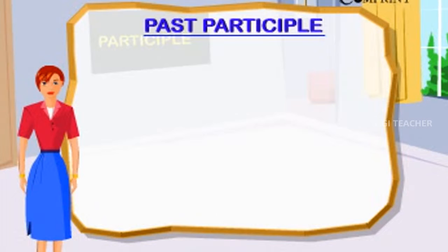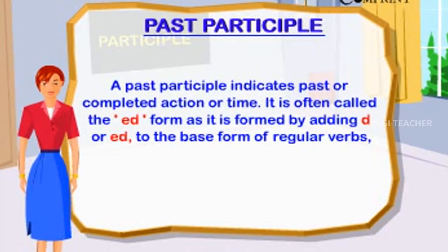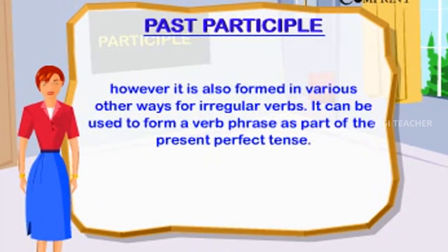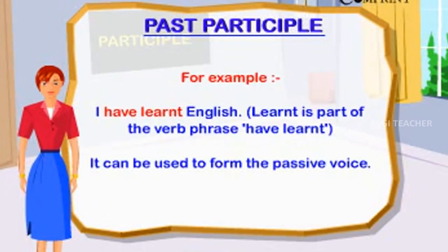Past Participle. A past participle indicates past or completed action or time. It is often called the 'ed form' as it is formed by adding 'd' or 'ed' to the base form of regular verbs. However, it is also formed in various other ways for irregular verbs. It can be used to form a verb phrase as part of the present perfect tense. For example, 'I have learnt English.' 'Learnt' is part of the verb phrase 'have learnt.'